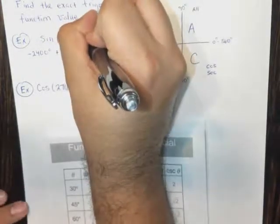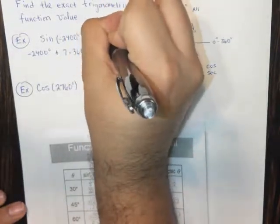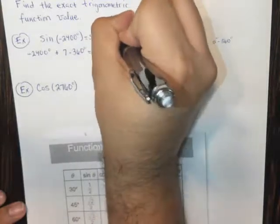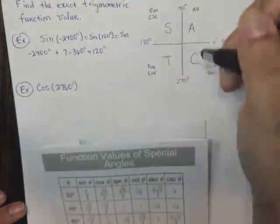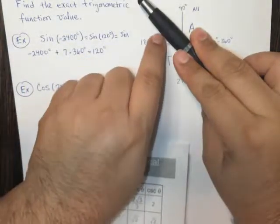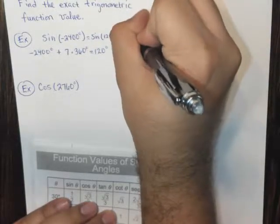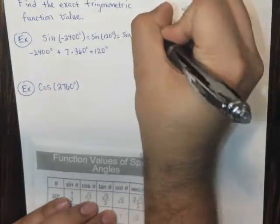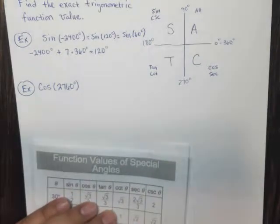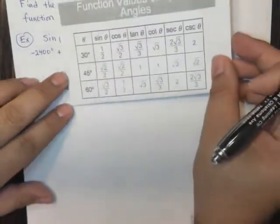So the sine of negative 2,400 is equivalent to the sine of 120, which is equivalent to the sine. And so if 120 is in here, by reference, 180 minus 120 is 60. So the sine then of 60 degrees is what we are looking for. So just take a look at that. If you don't quite understand, pause and rewind.